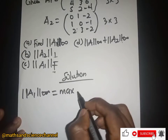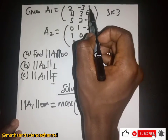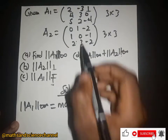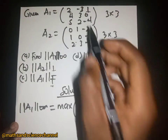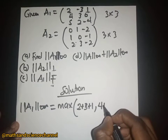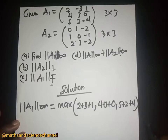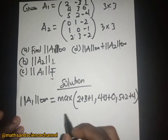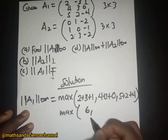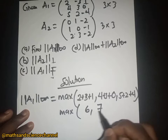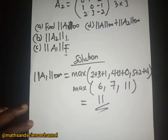For matrix A1, we take the row sums. The first row: 2 + 3 + 1. The second row: 4 + 3 + 0. The third row: 5 + 2 + 4 — the negative becomes positive because of absolute value. Computing these gives us 6, 7, and 11 respectively, so the maximum is 11. That is the infinity norm for A1.